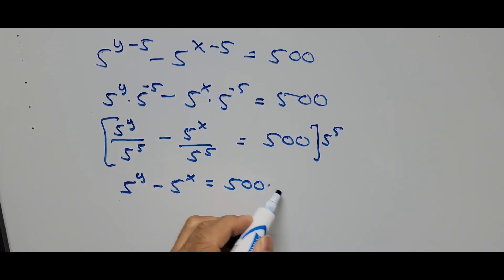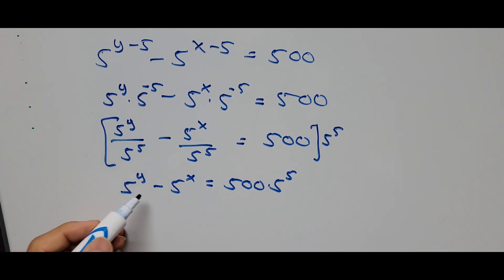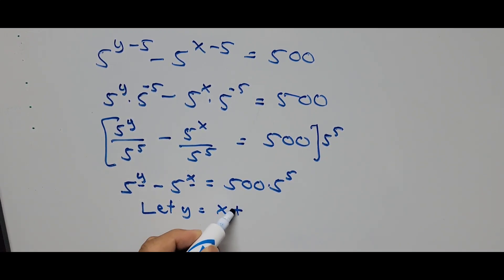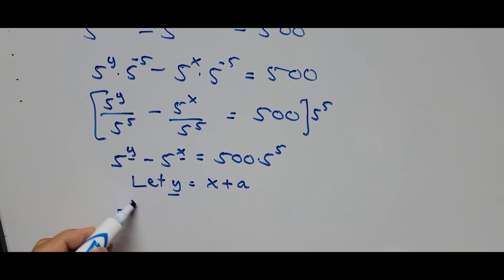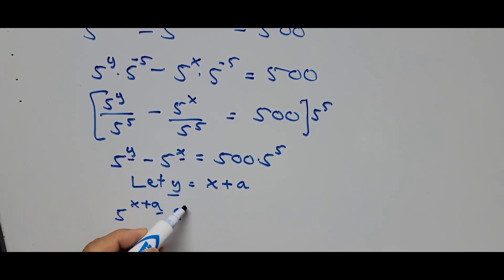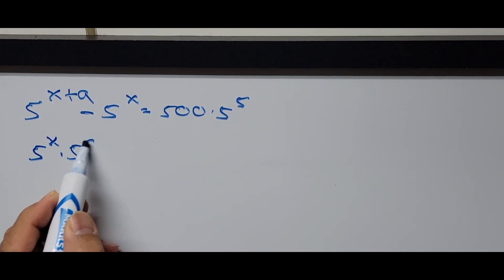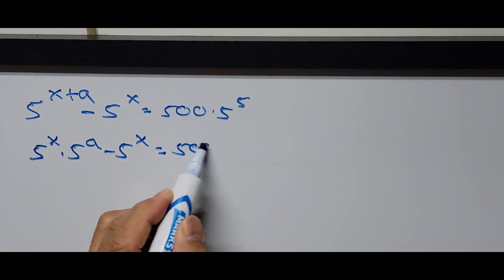From here, we introduce a substitution variable. Since y is greater than x, let y equal x plus a constant A. Substituting this value of y, the equation becomes 5 raised to (x plus a) minus 5 raised to x equals 500 times 5^5. Simplifying: 5^x times 5^a minus 5^x equals 500 times 5^5. Factoring out 5^x gives 5^x times (5^a minus 1) equals 500 times 5^5.